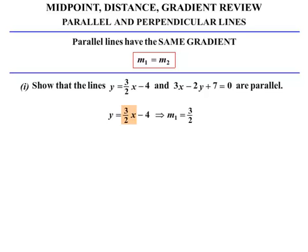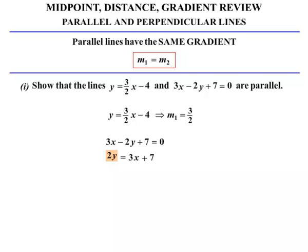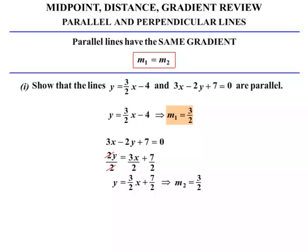For the second equation, we need to rearrange it to get Y by itself. Bringing the minus 2Y over makes it positive: 2Y equals 3X plus 7. Dividing everything by 2 gives Y equals (3/2)X plus 7/2. Now we can see the gradient: M2 equals 3 over 2. So we have M1 equals 3/2 and M2 equals 3/2. Therefore the lines are parallel, since M1 equals M2.